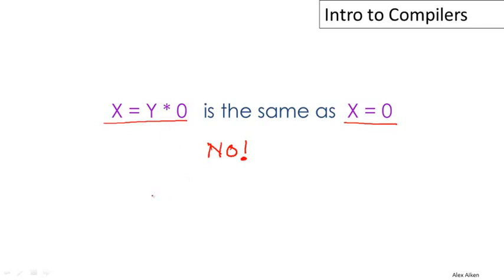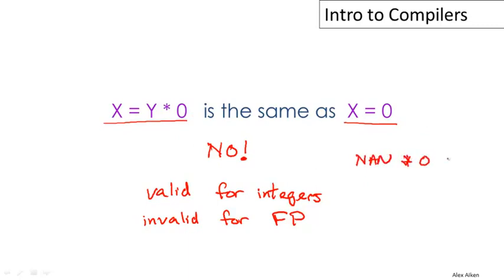It turns out that this particular rule is valid for integers. If x and y are integers, then multiplying by zero is always the same thing as just assigning zero. But it's invalid for floating point. And why is that? Well, because you have to know some details of the IEEE floating point standard. There is a special number in the IEEE standard called not a number. And it turns out that not a number, called a NaN, times zero is equal to not a number. In particular, not a number times zero is not equal to zero. So if x and y are floating point numbers, you can't do this optimization. And in fact, if you did this optimization, it would break certain very important algorithms that rely on the proper propagation of not a number.